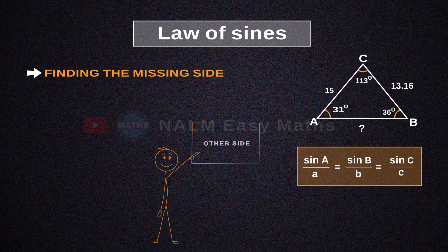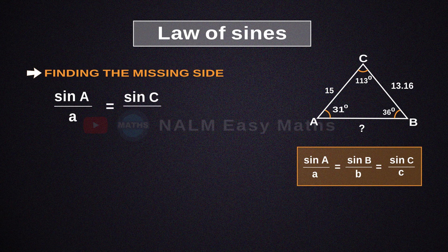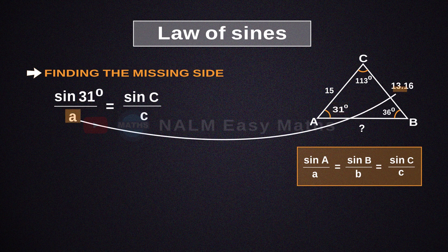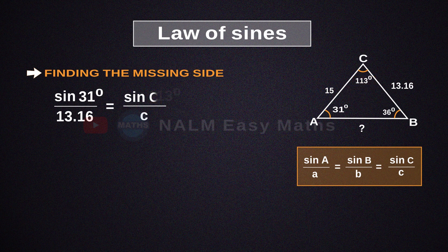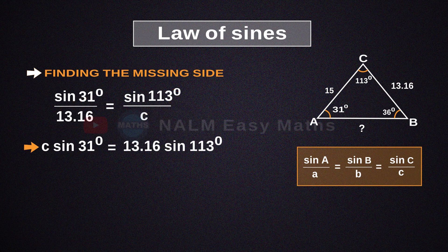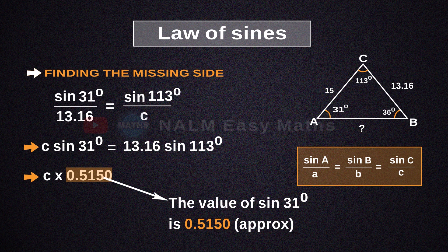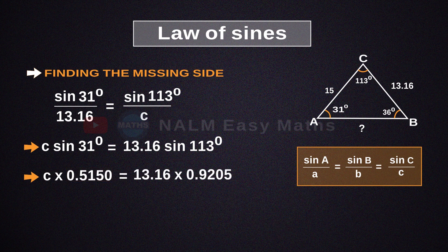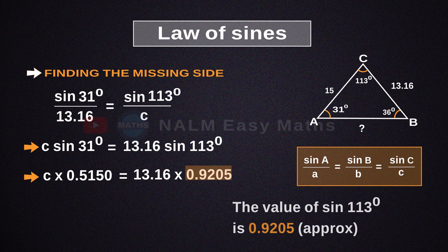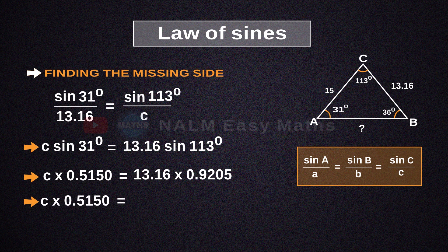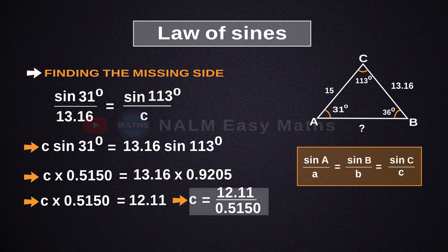Now for the other side, as per the law, let's take sine A over A equals sine C over C. A is 31 degrees and side A is 13.16. Cross-multiplying gives C times sine 31 degrees equals 13.16 times sine 113 degrees. We know sine 31 degrees is approximately 0.5150, so C times 0.5150 equals 12.11. Therefore C equals 12.11 divided by 0.5150, giving C equals 23.509.